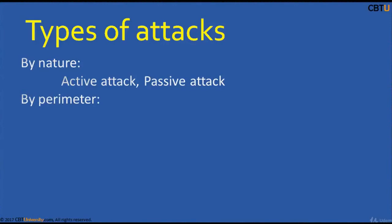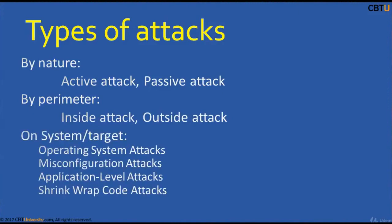By parameter, attacks are classified as inside attacks or outside attacks. An inside attack is initiated inside the security perimeter, possibly by an authorized user. An outside attack is carried out by an unauthorized or illegitimate user mostly. On a system target, attack types include operating system attacks exploiting OS vulnerabilities, misconfiguration attacks, application-level attacks, and shrink wrap code attacks — which involve exploiting holes in unpatched or poorly configured software.